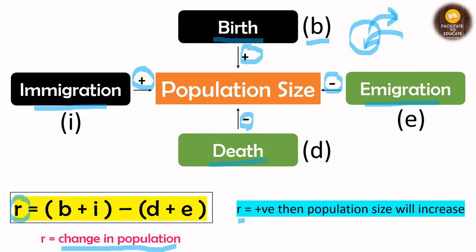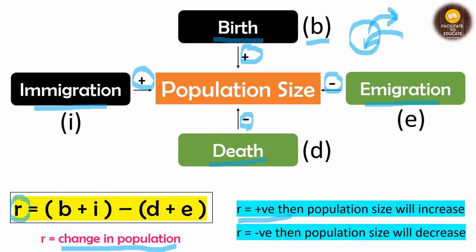If there is a positive change in the population, then the size is increasing, and if there is a negative change, then the size is decreasing. Remember this formula clearly and also the difference between immigration and emigration.